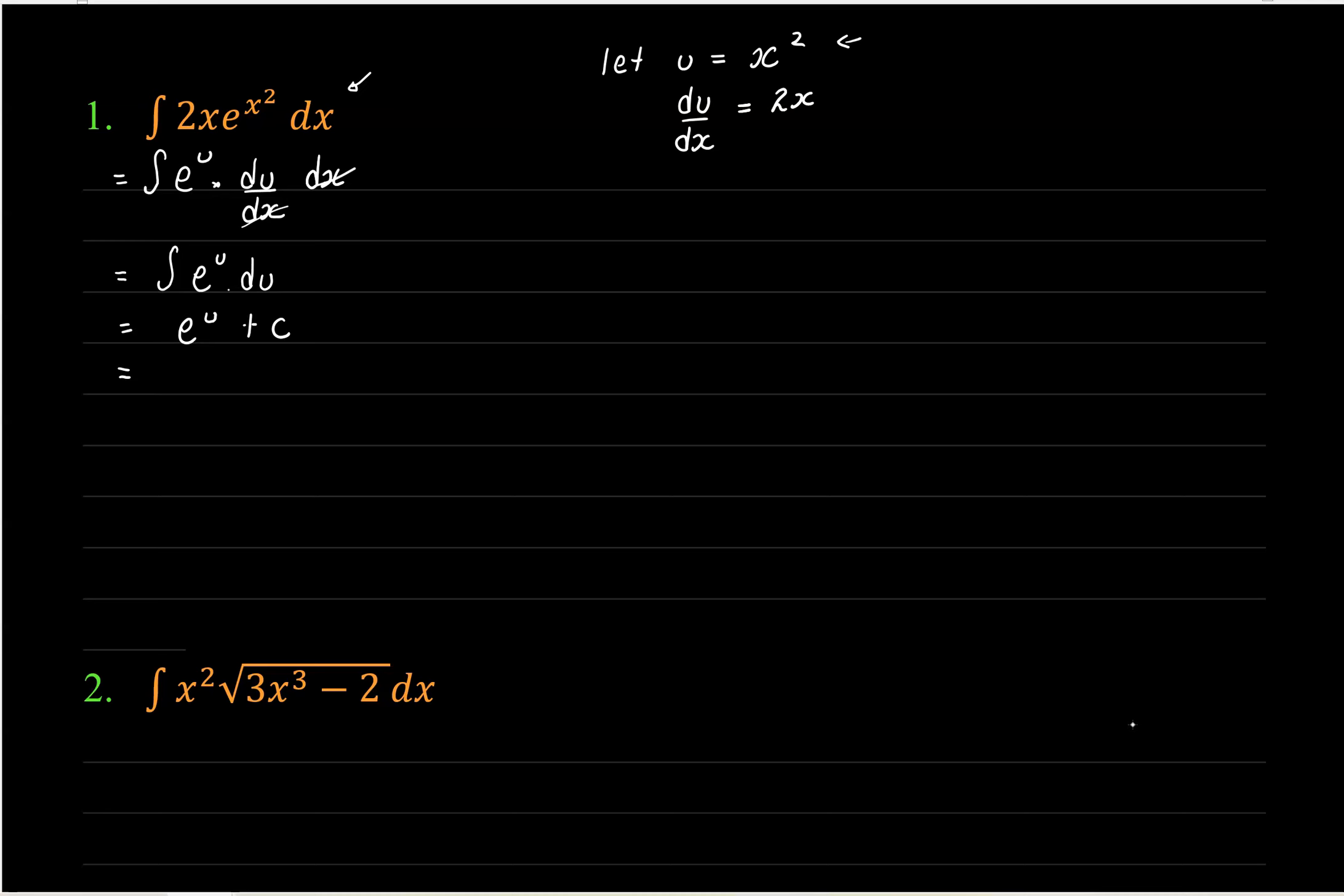And now we love exponentials because we know that the integral of e to the u is just e to the u, and don't forget your plus c. And we finish off by just replacing u with the function that it was, so it's e to the x squared plus c. And that's done.